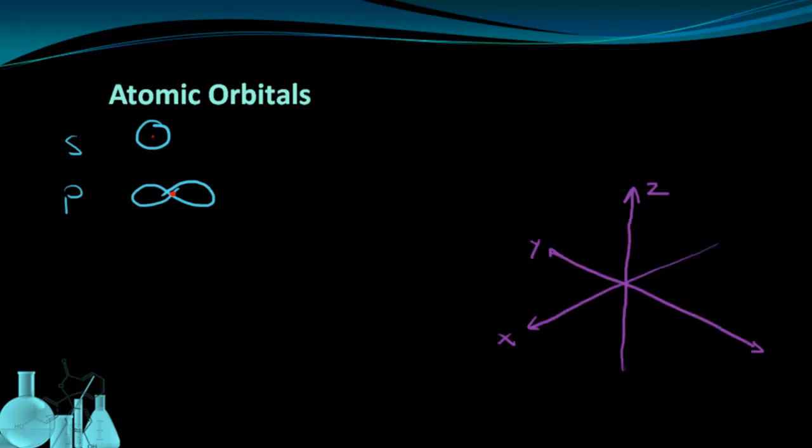We're going to place the nucleus in the center of these three axes. And therefore, when we put in our s orbital, it should be centered around that. Here's our s-shaped orbital. It's a sphere centered around the nucleus.